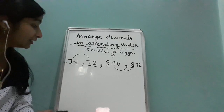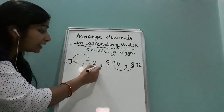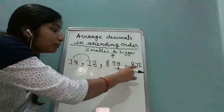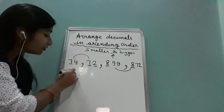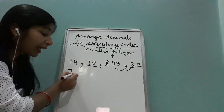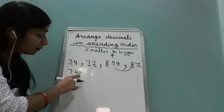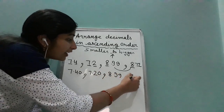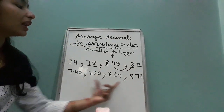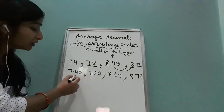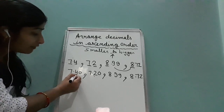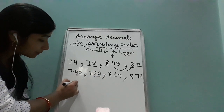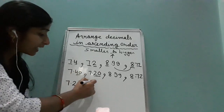Now we check if they are like decimals. The 7s have one decimal place each and the 8s have two decimal places each, so they are unlike decimals. We make them like decimal by adding a zero: 7.20 and 7.40, 8.99 and 8.72. Now comparing the 7s: whole part is same, decimal parts are 40 and 20 — so 7.20 is smaller than 7.40.